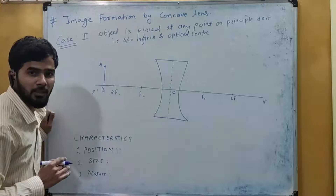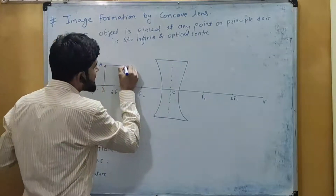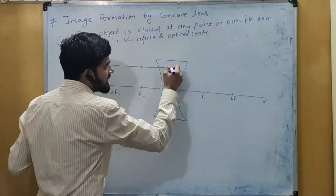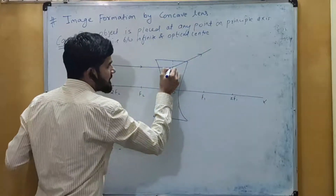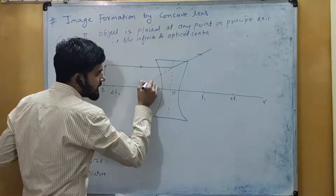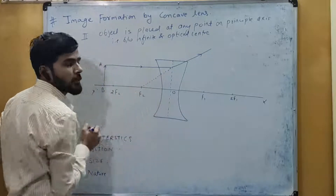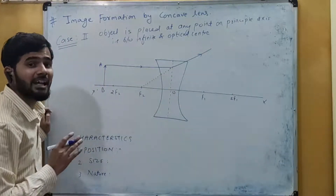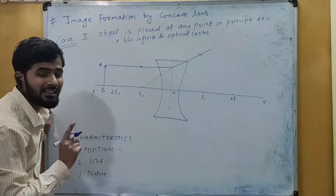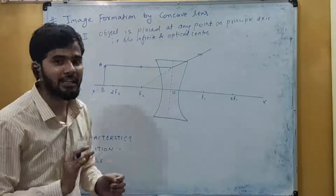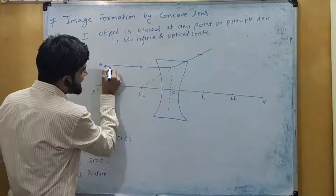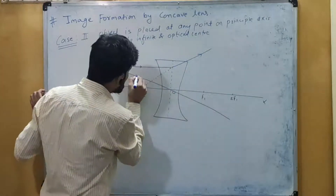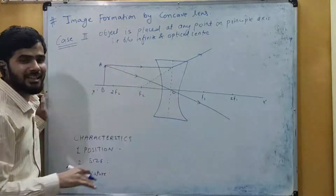Let us consider that this is the object AB having some finite size. We will use Rule Number 1: the light ray parallel to the principal axis, after refraction, appears to come from the principal focus. Then we apply Rule Number 2: if a light ray passes through the optical center, it remains undeviated. So the second light ray passes directly through the optical center without bending.